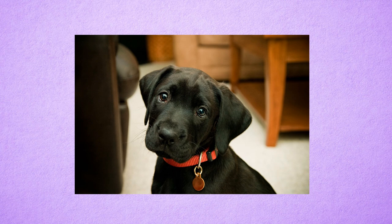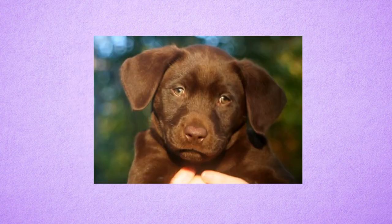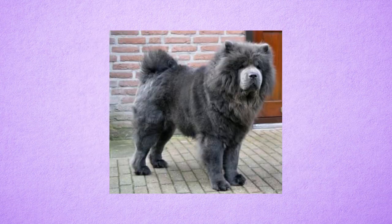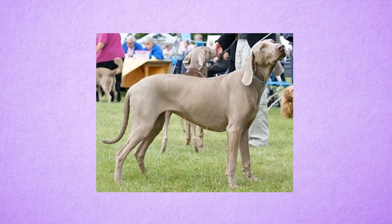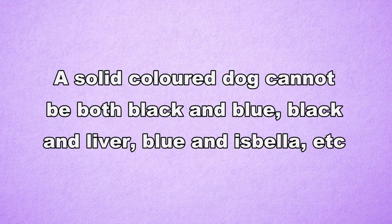Eumelanin is the default pigment for black. All black areas on a dog are caused by eumelanin. But there are genes that can turn eumelanin into other colors like liver, which is brown, blue, which is gray, and Isabella, which is pale brown or like a lilac. If the dog has any genes that turn its black eumelanin into liver, blue, or Isabella, then all of the black in its coat will be changed. A dog cannot be both black and blue, or black and liver.